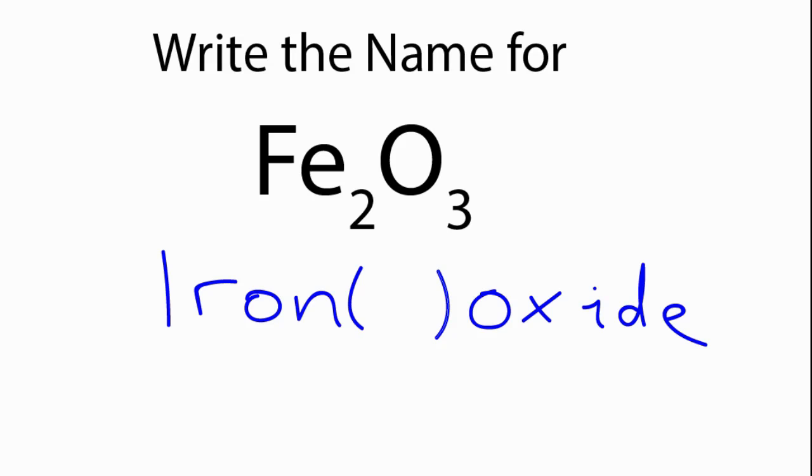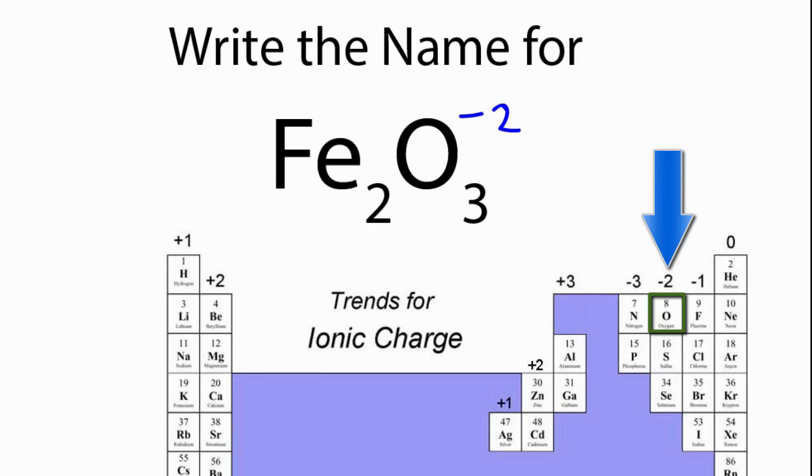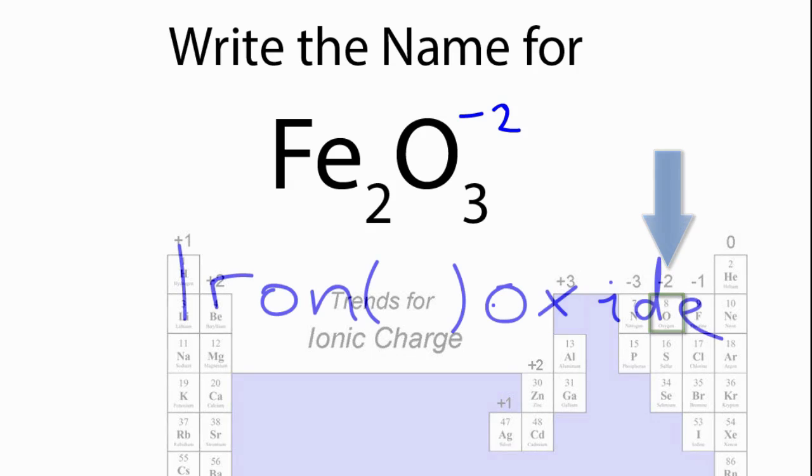So we can find the charge on each atom of Fe by looking at the oxygen. We know that oxygen always has a minus 2 charge, and since we have 3 of them, 3 times minus 2, that gives us minus 6.